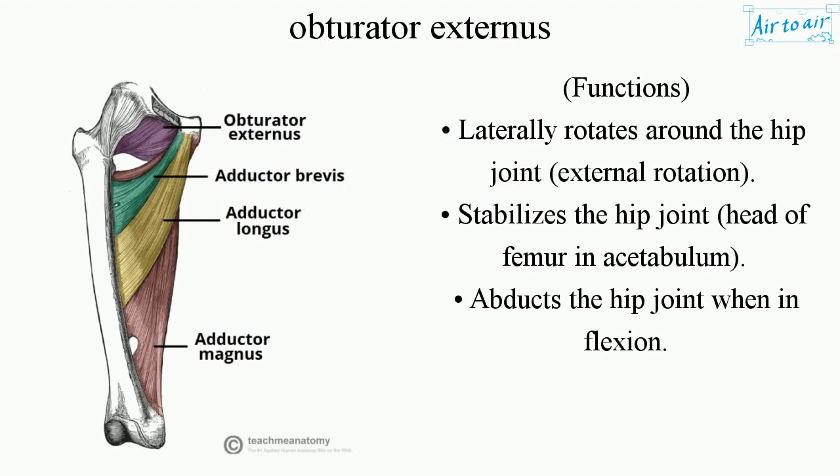Functions: it laterally rotates around the hip joint, provides external rotation and stabilizes the hip joint — keeping the head of femur in the acetabulum — and abducts the hip joint when in flexion.